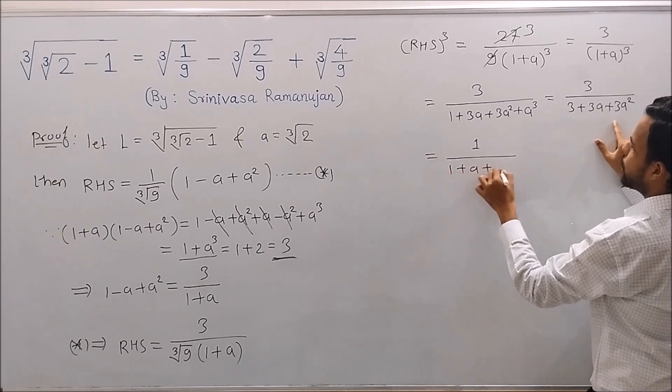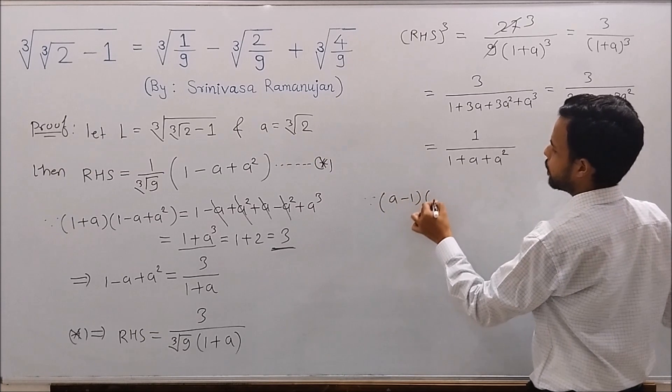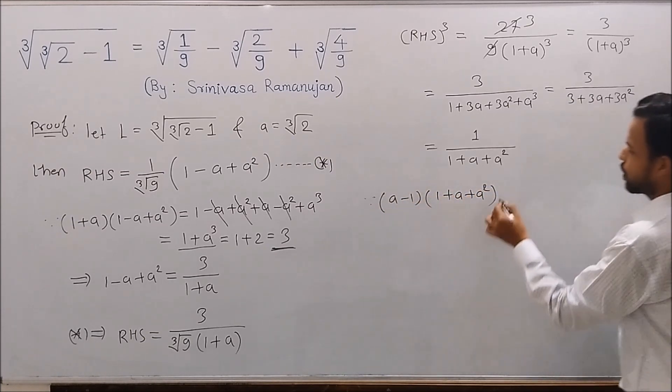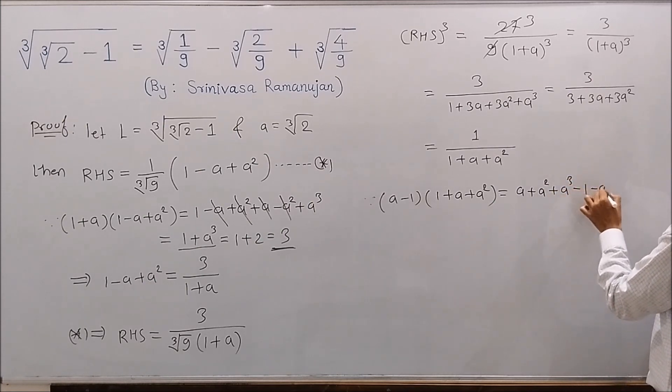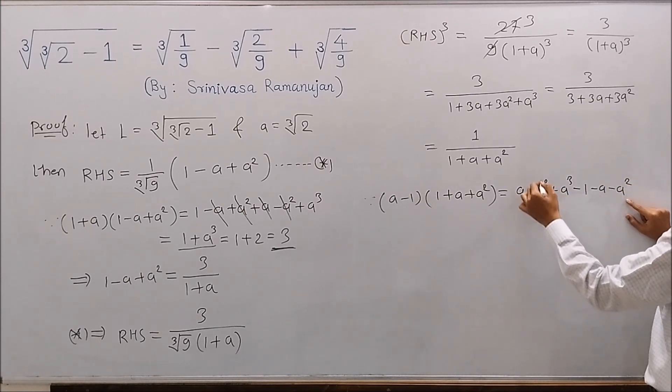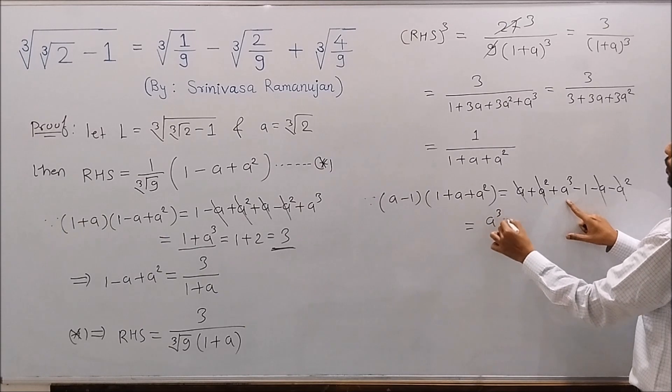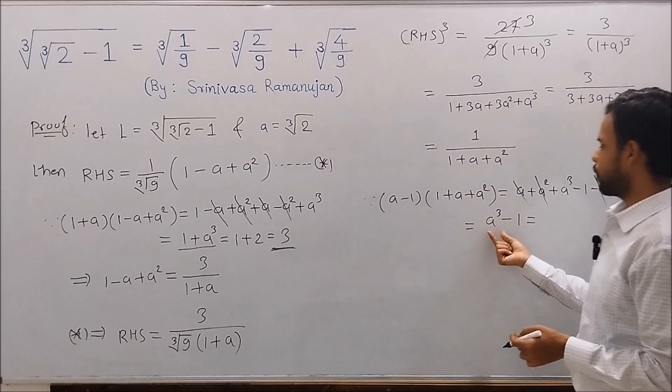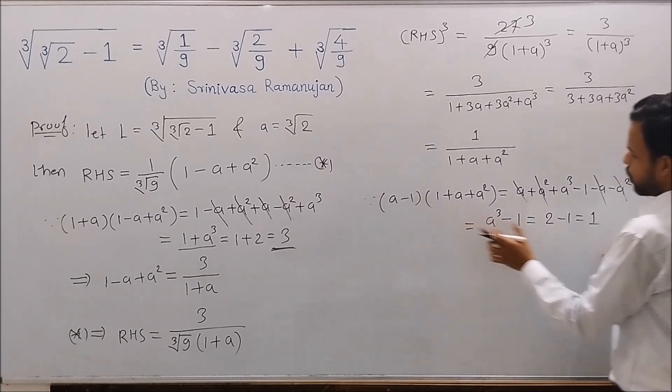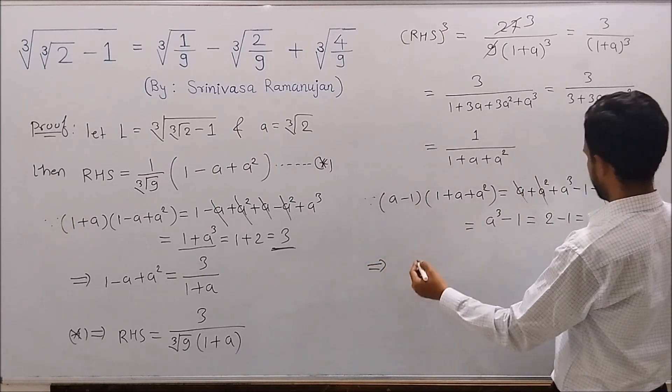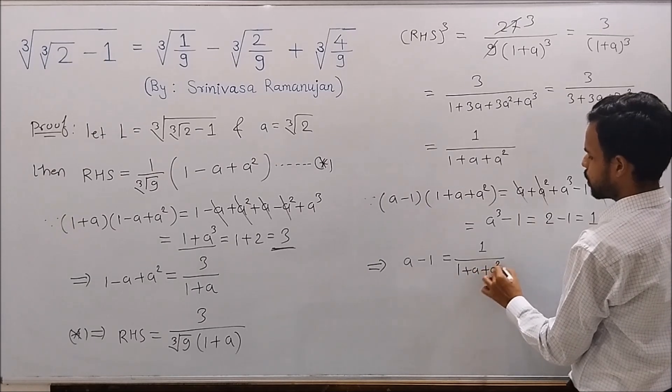Now since (A minus 1) times (1 plus A plus A squared) equals A cubed minus 1, and A cubed equals 2, so A cubed minus 1 equals 1, the product of these two terms equals 1. So from here we have A minus 1 equals 1 over (1 plus A plus A squared).